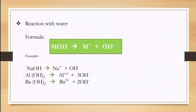Reaction with water: bases react with water and they dissociate into a cation and an anion. For example, sodium hydroxide in water will dissociate to be sodium as the cation and hydroxide ion as the anion. Barium hydroxide in water will dissociate to be barium as the cation and hydroxide ion as the anion.